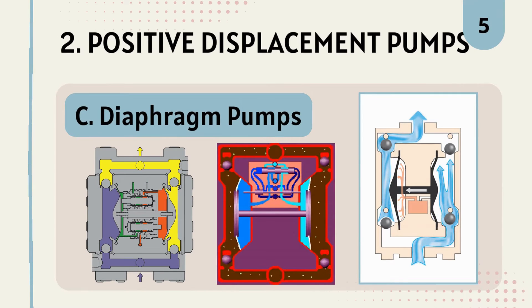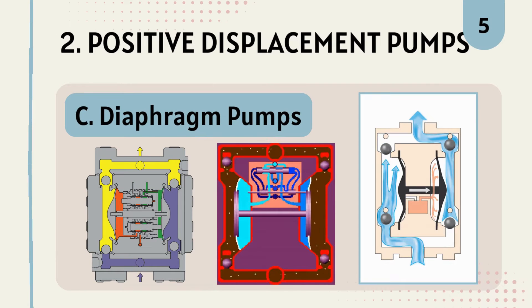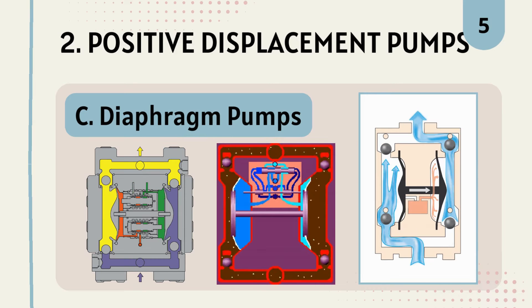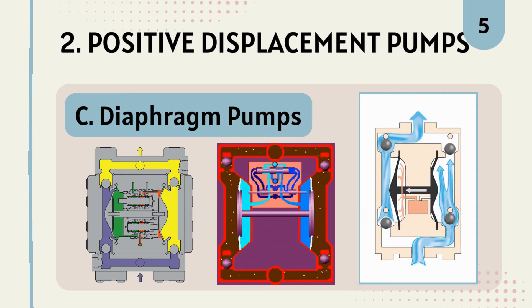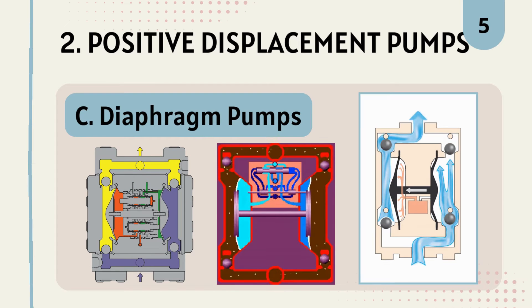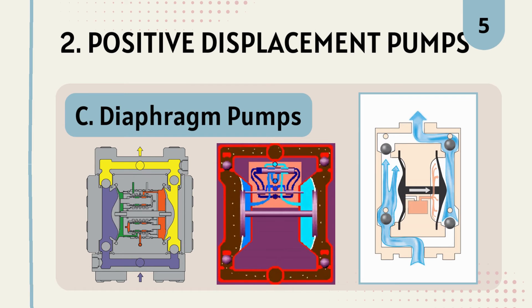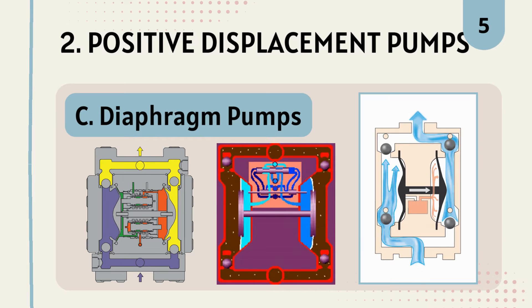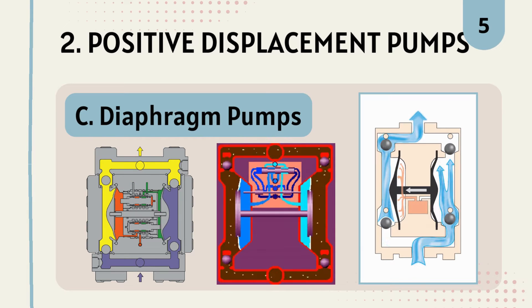The next type of positive displacement pump is the diaphragm pump. A diaphragm pump uses a flexible diaphragm to pump the fluid. They are suitable for handling corrosive liquids and abrasive fluids, and are often used in chemical processing and metering applications.